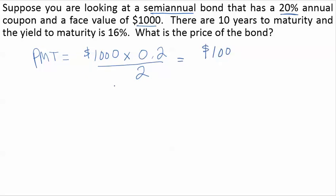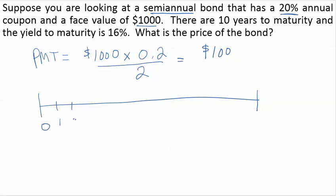The bond has 10 years to maturity, but because it's semi-annual, that means there are 20 six-month periods. On the timeline, we mark 20 periods, using an ellipsis to indicate the count increases up to 20, with payments of $100 repeated every period.